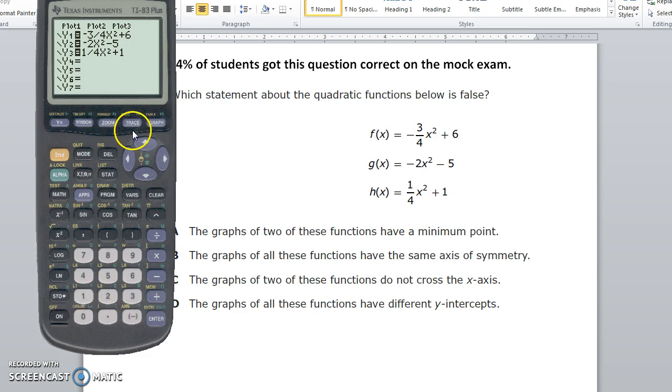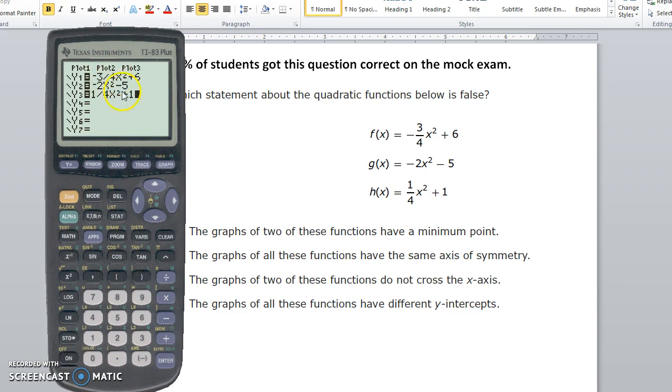So the tricky thing about this is I need to make sure I watch which of these graphs, or the three graphs that come up. The first graph that graphs will be this one, and then this one, and then this one.